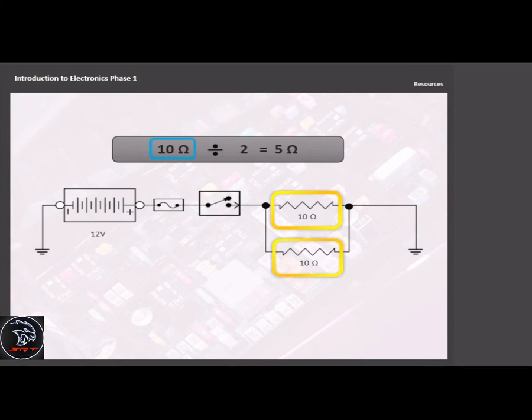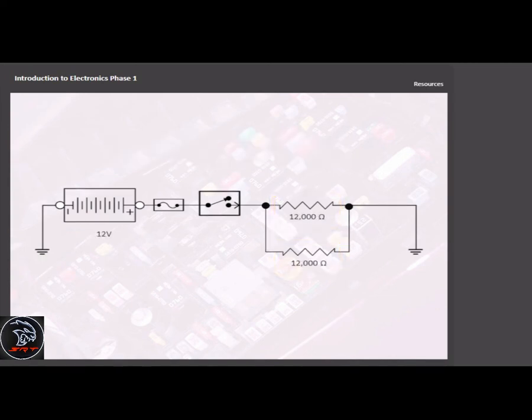In this first example, we have a circuit with two parallel 12,000 ohm resistors or branches. Dividing 12,000 by 2 gives us the total circuit resistance of 6,000 ohms.